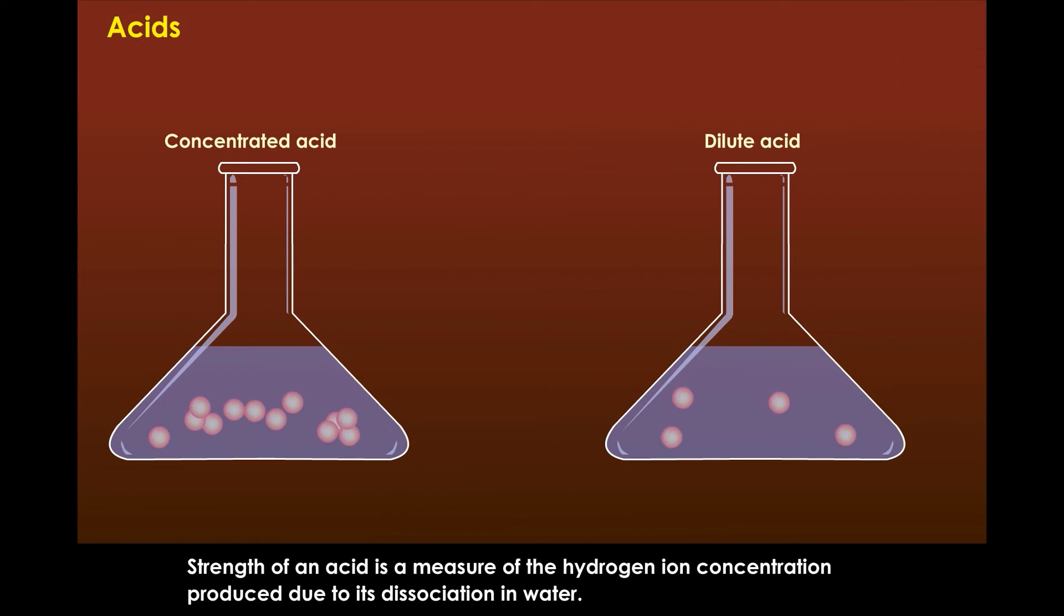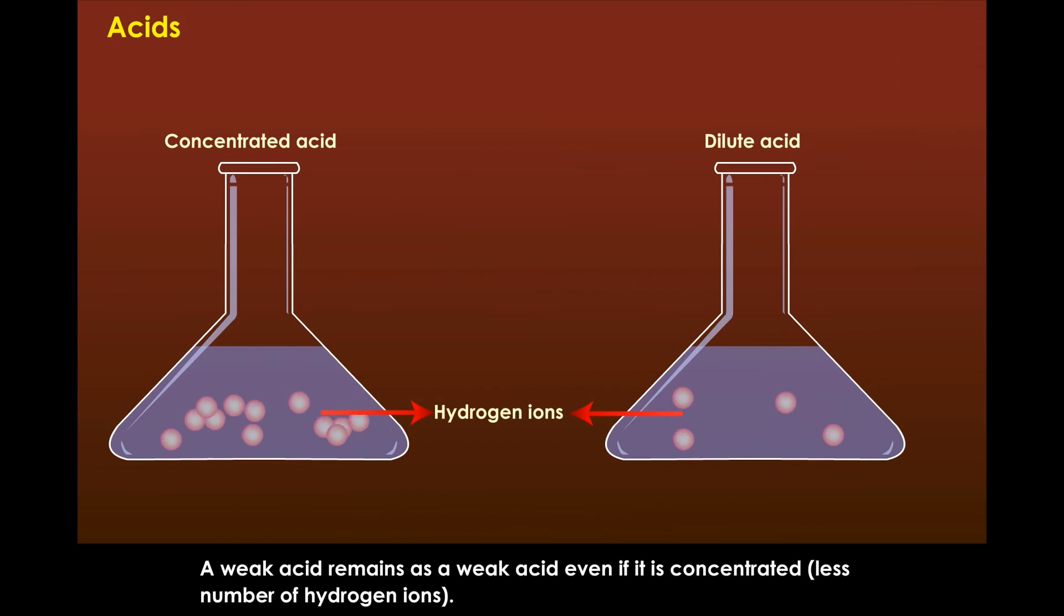Strength of an acid is a measure of the hydrogen ion concentration produced due to its dissociation in water. A weak acid remains as a weak acid even if it is concentrated, producing less number of hydrogen ions.